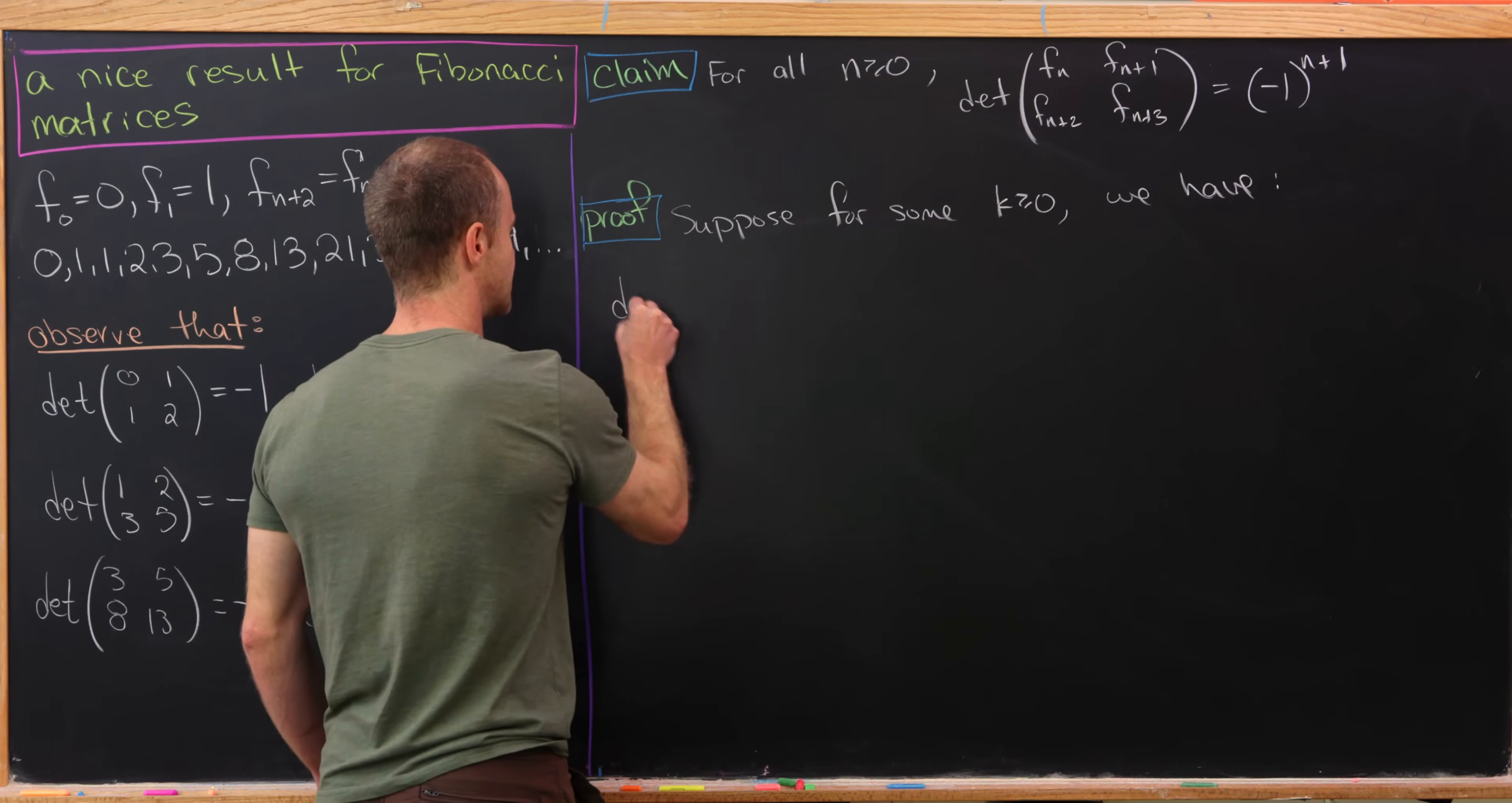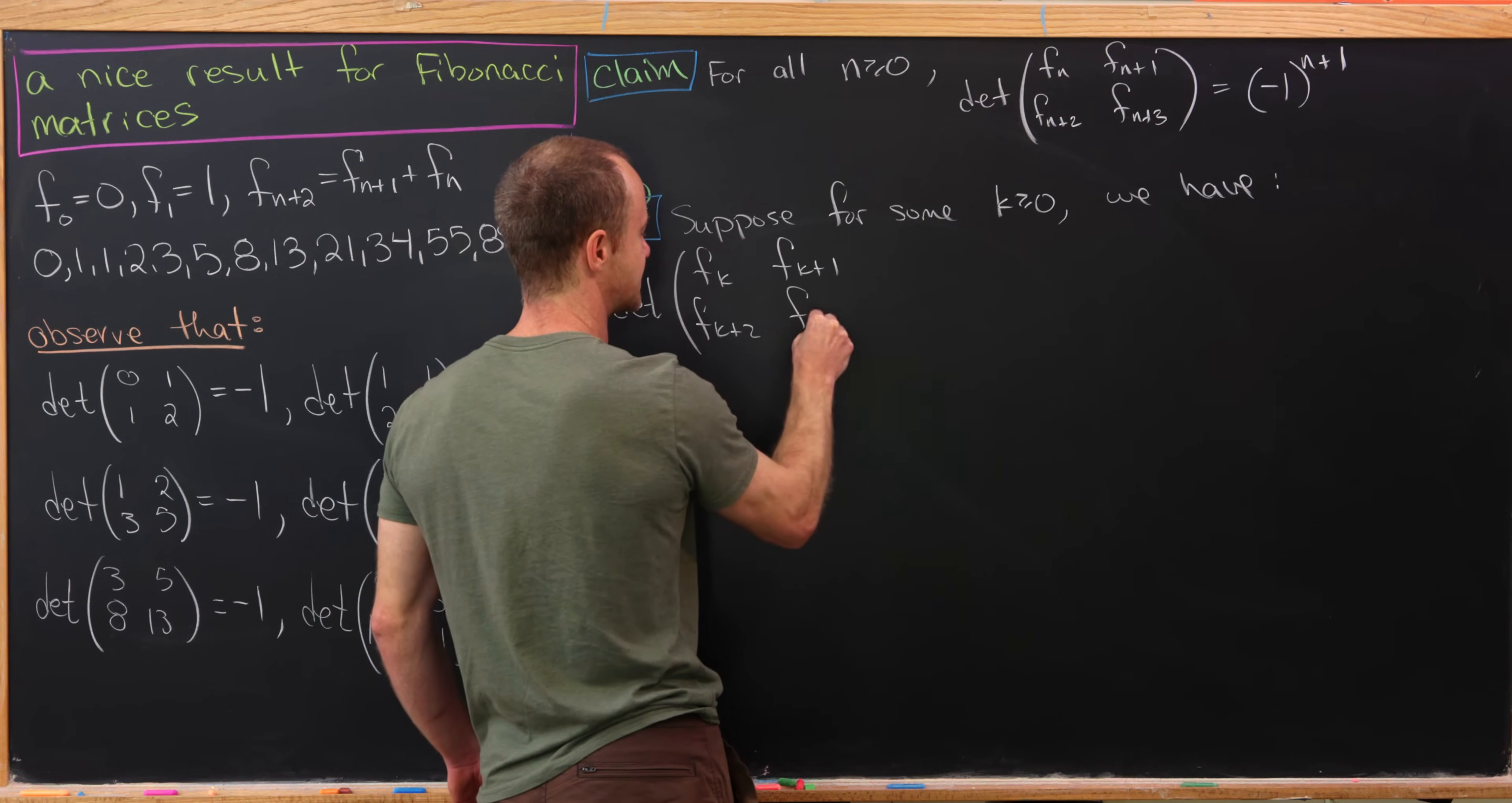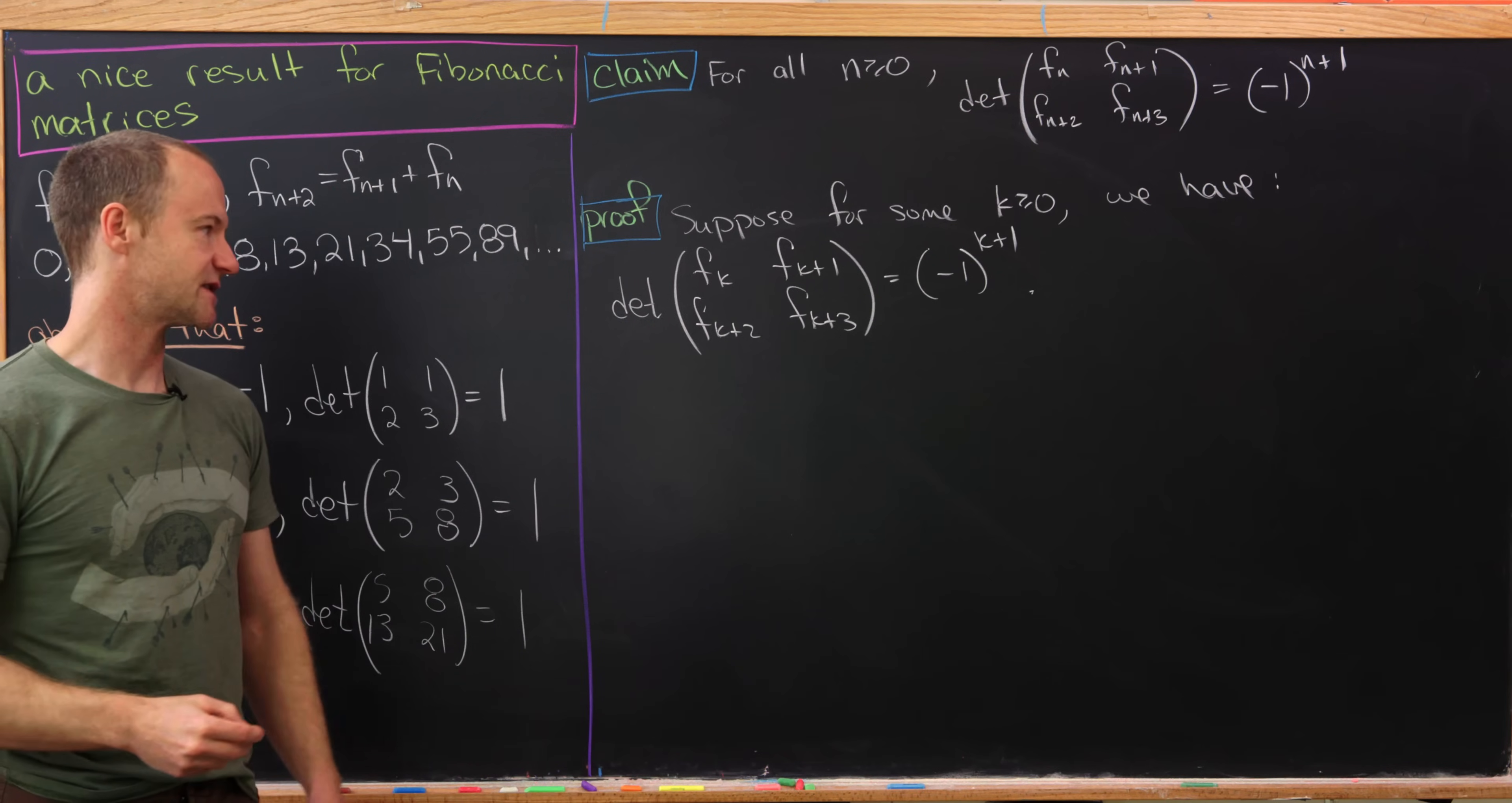So let's just make an induction hypothesis. Let's suppose for some k bigger than or equal to 0, we have the result holds for that value of k. So in other words, the determinant of fk, fk+1, fk+2, and fk+3 is indeed equal to minus 1 to the k+1. So again, that's known as the induction hypothesis.